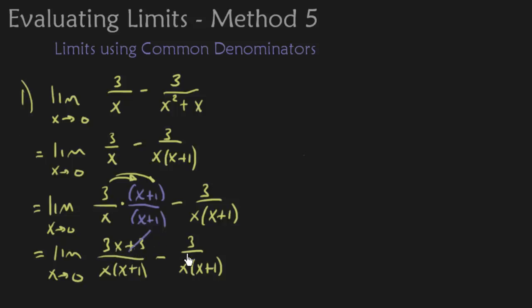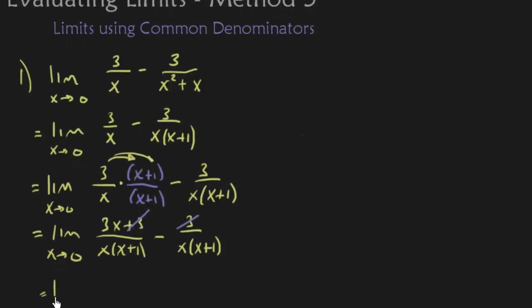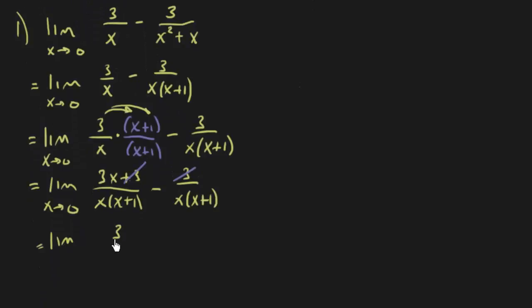Now what I'm hoping you see is at this point you're going to have a 3x plus 3, and then you're going to immediately subtract 3. So when we simplify this piece, we're going to get 3x over x, x plus 1.